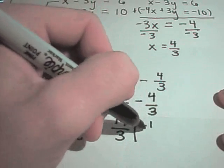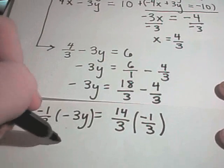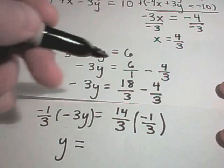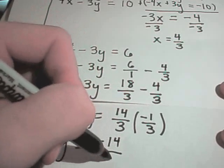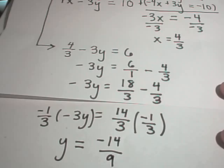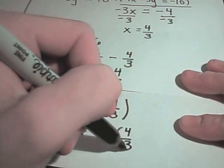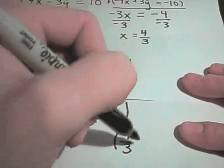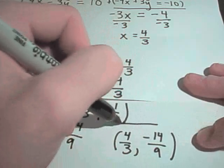That means I have to multiply the right side by negative 1 third as well. So I'll get y equals, and remember with fractions, you just multiply across the top. You multiply across the bottom. And again, now we've got our solution. It says our solution is going to be 4 thirds. That's what we found for x. And negative 14 ninths is going to be our y value.